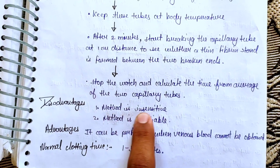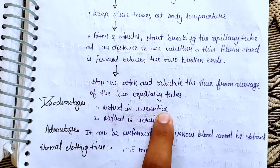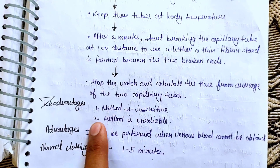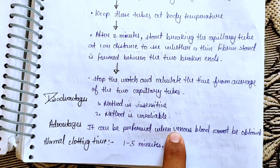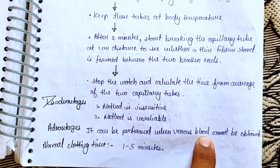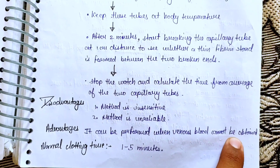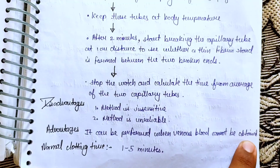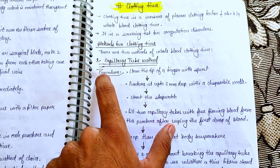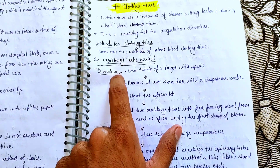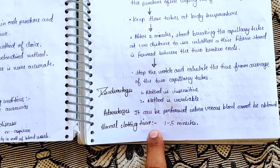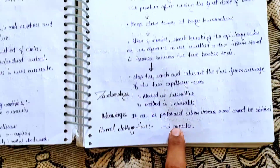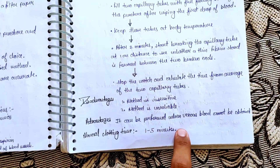The Capillary Tube Method is insensitive and unreliable, but its advantage is that it can be performed when venous blood cannot be obtained. The normal clotting time for the Capillary Tube Method is 1–5 minutes.